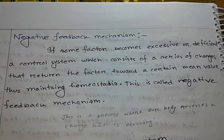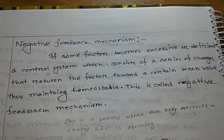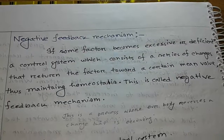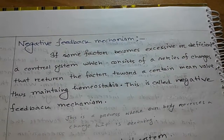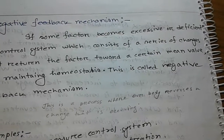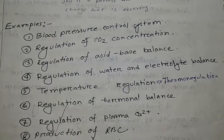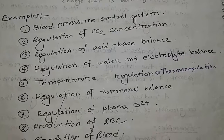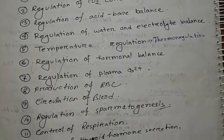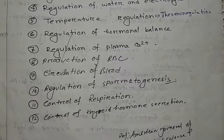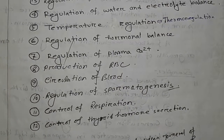Now, negative feedback mechanism. If some factor becomes excessive or deficient, a control system consisting of a series of changes returns the factor toward a certain mean value, thus maintaining homeostasis — this is called negative feedback mechanism. Simply, this is a process where our body reverses a change that is occurring. Examples: blood pressure control system, regulation of carbon dioxide concentration, regulation of acid-base balance, regulation of water and electrolyte balance, temperature regulation or thermoregulation, regulation of hormonal balance, regulation of plasma calcium, production of RBCs, circulation of blood, control of respiration, and control of thyroid hormone secretion.